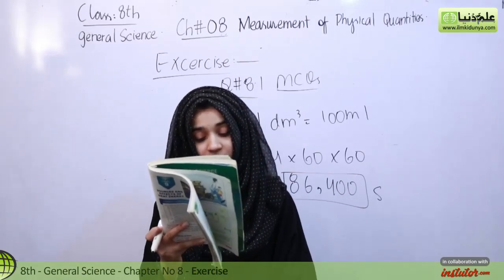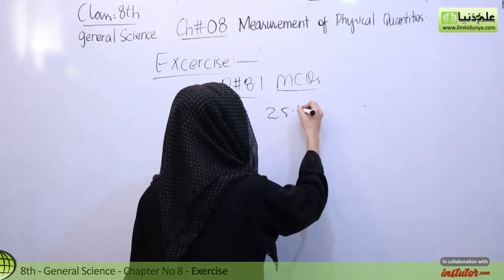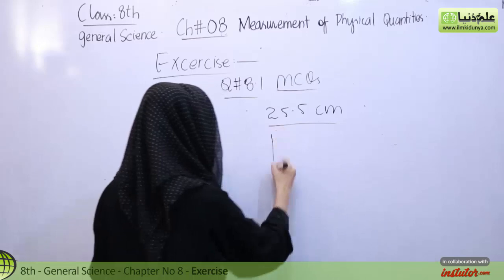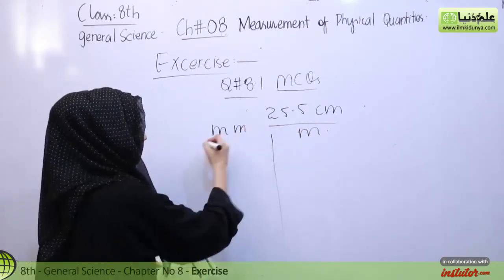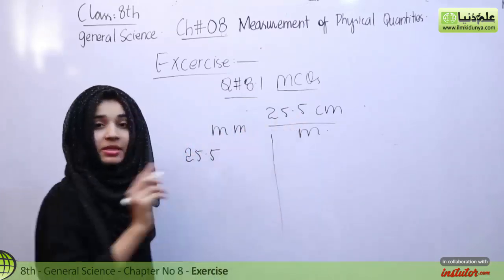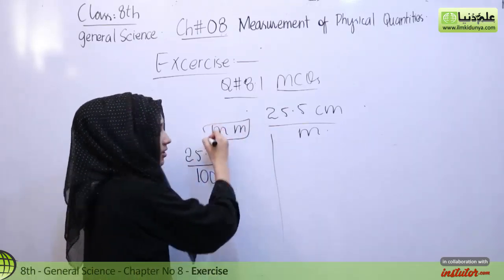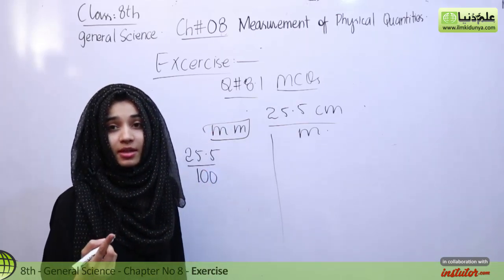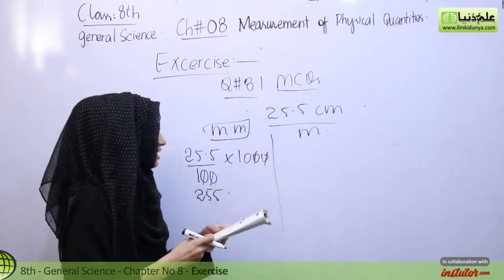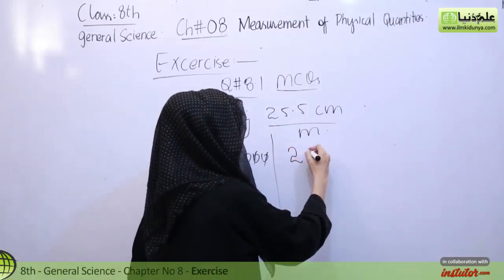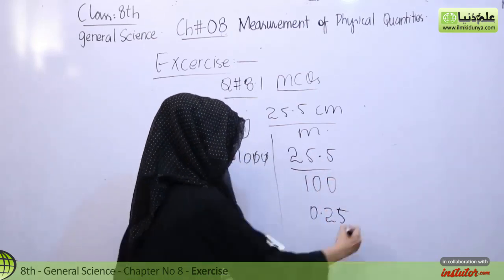Question number 3, the length of a wooden rod is 25.5 cm. What is its length in millimeter and meter? The length is 25.5 cm. We have to convert to millimeter and meter. To convert centimeter to millimeter, we multiply by 10. So the answer is 255 millimeters. Now, we have to convert this in meters. 25.5 cm, we will divide it by 100. The answer is 0.255 meters.